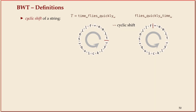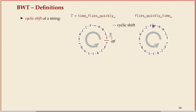So what is the BWT? We need one definition first: the notion of a cyclic shift. Imagine you have a text and you write it along a circle, closing the loop. A standard string is a cyclic string plus a starting position. The cyclic shift is the same circle but starting at a different position. Equivalently, you take some characters from the beginning and move them to the end — you can do that with any number of characters, not just at word boundaries. That's a cyclic shift.